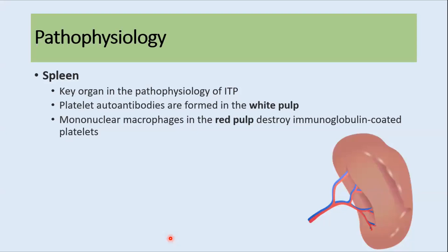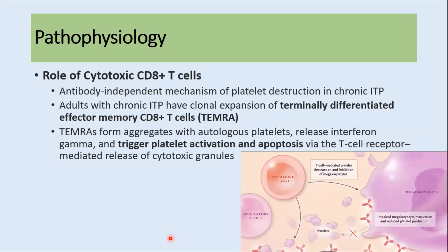The spleen has a very important role in the pathophysiology. The white pulp of the spleen is responsible for the production of platelet autoantibodies, while the red pulp is responsible for destroying immunoglobulin-coated platelets. Similarly, cytotoxic CD8 T cells are also responsible for immune thrombocytopenia, destroying platelets through an antibody-independent mechanism.